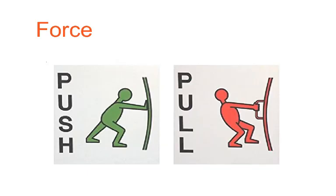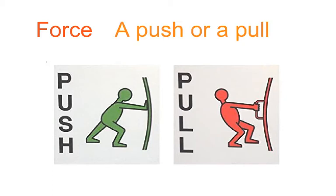The first vocabulary word we're going to focus on is the word force. In science we sometimes use a different way of explaining a word than you might use in another context. In physics, a force is an interaction that will change the motion of an object. It can cause an object with a mass to change its velocity, which means to accelerate, to move. For your vocabulary definition, the simplest term is a push or a pull.